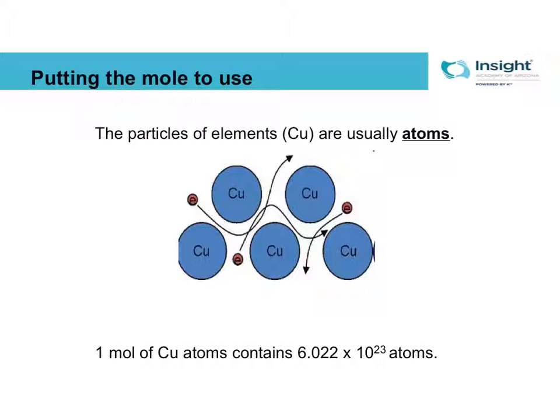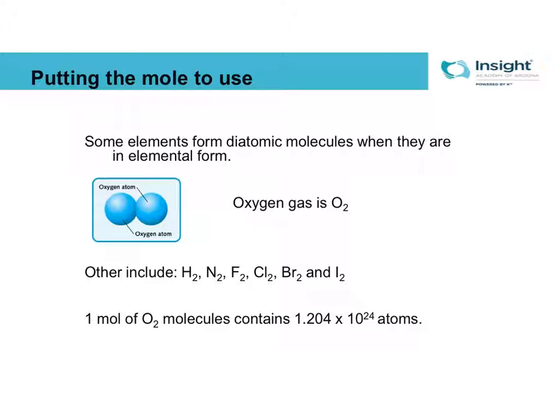You might have to convert between how many atoms you have and how many moles. If you know you have a mole of copper atoms, that means you have 6.022 times 10 to the 23rd atoms. Or vice versa, if you know you have 6.022 times 10 to the 23rd copper atoms, you know you have a mole of copper atoms.